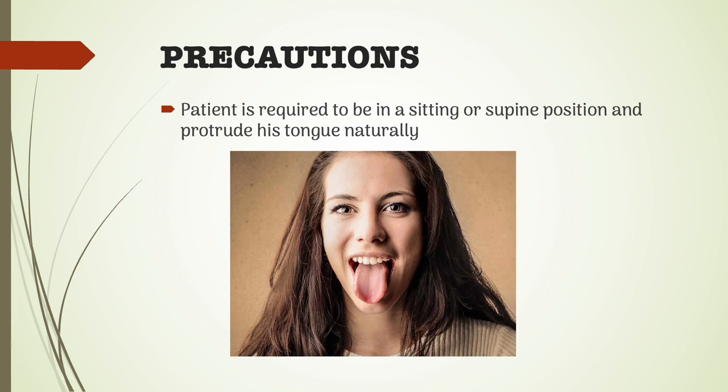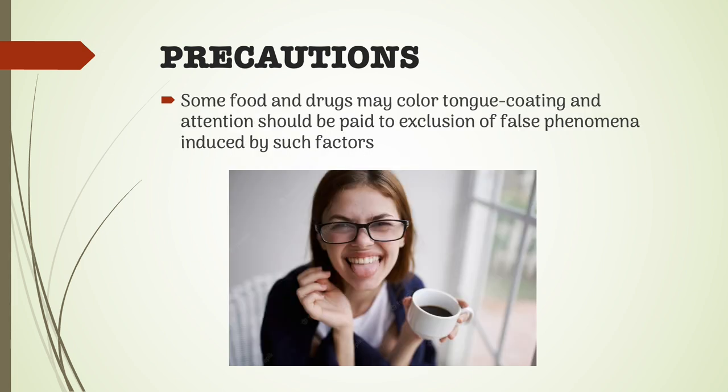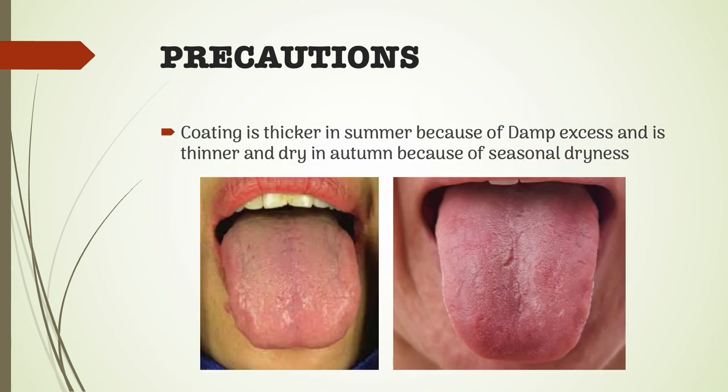Ask the patient to put the tongue back in and then out again; you can do this several times. Some food and drugs may color the tongue coating and attention should be paid to the exclusion of false phenomena induced by such factors. With seasonal changes, the tongue may have slight changes. For instance, the coating is thicker in summer because of damp excess and it is thinner and dry in autumn because of seasonal dryness.